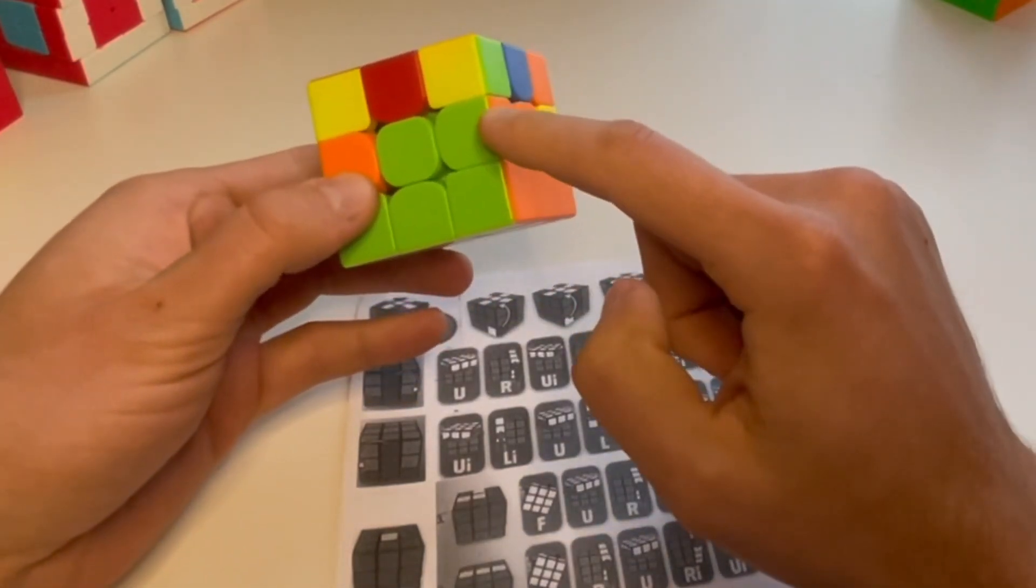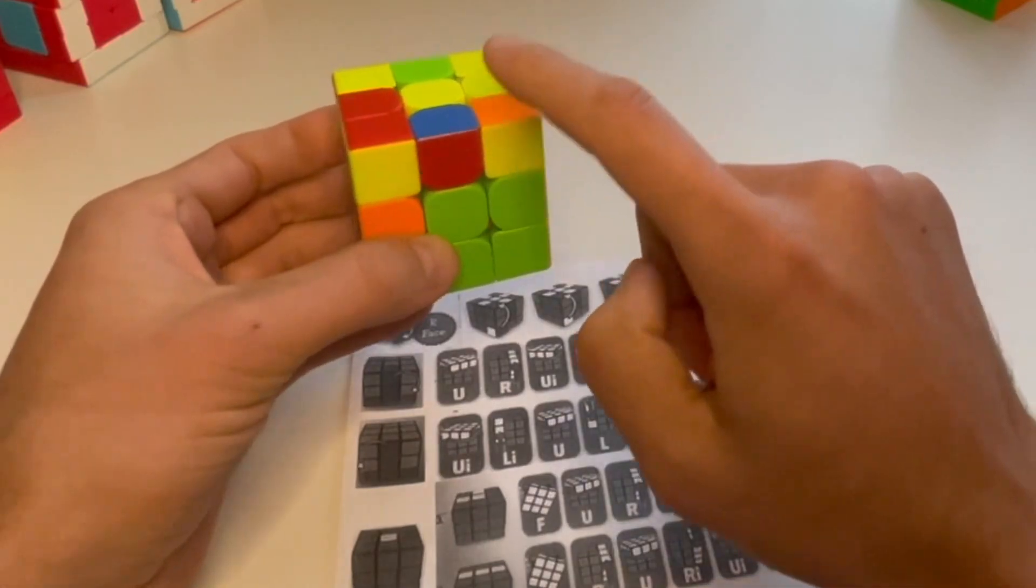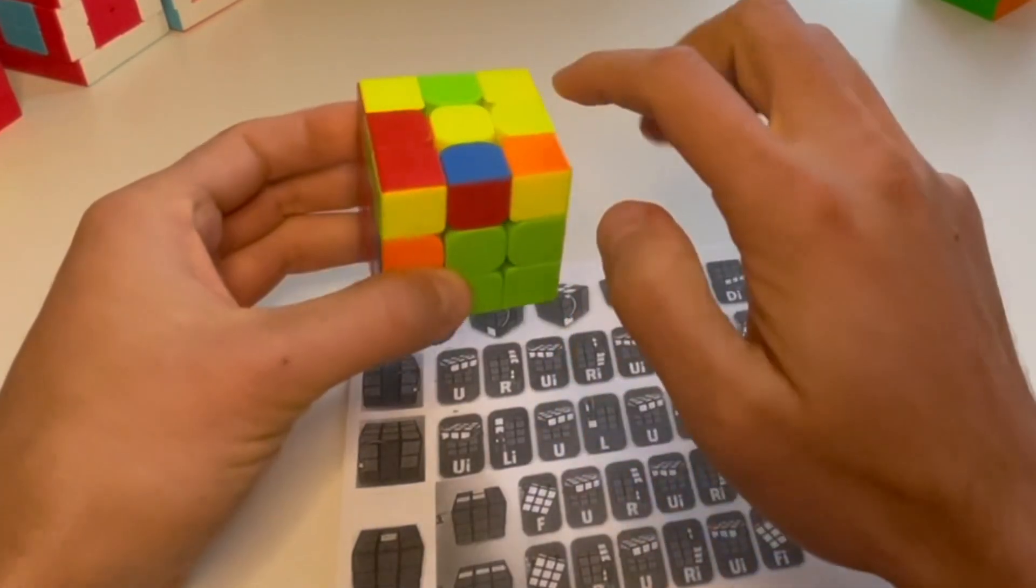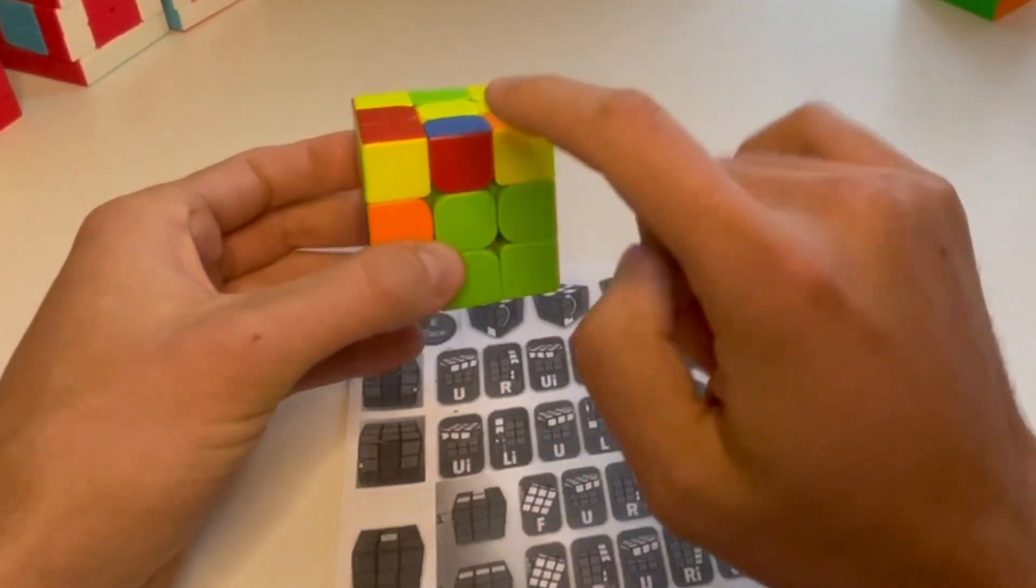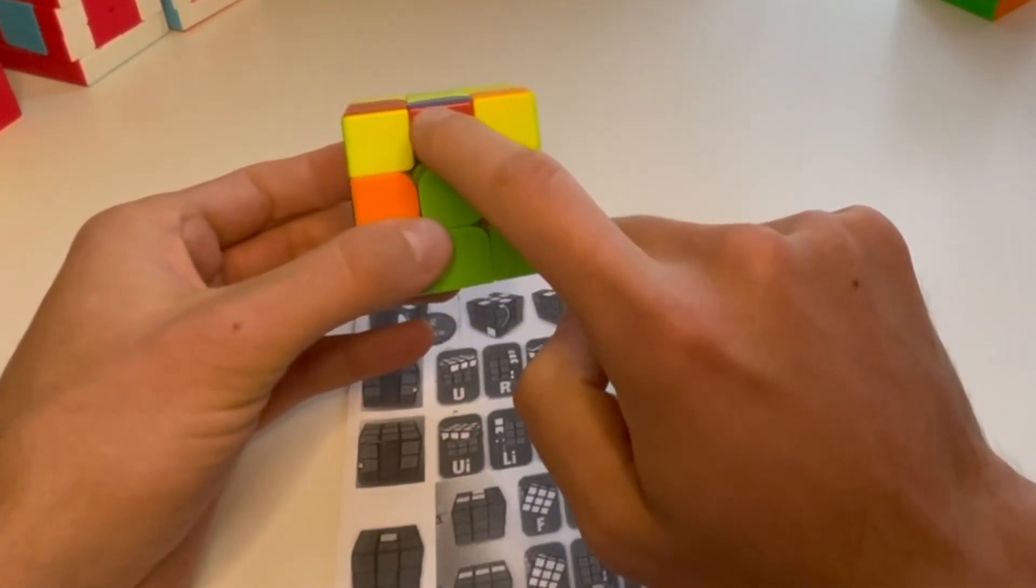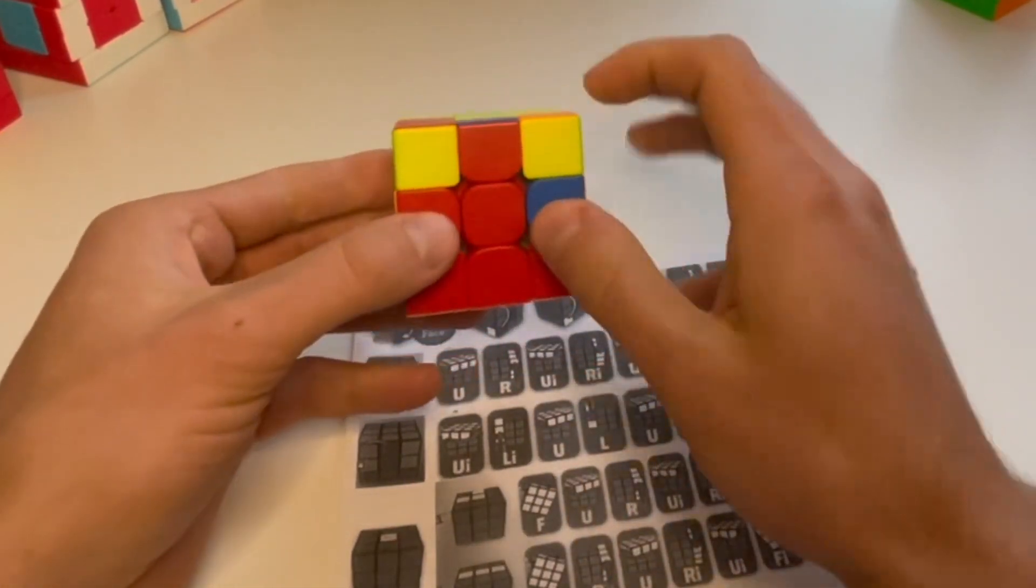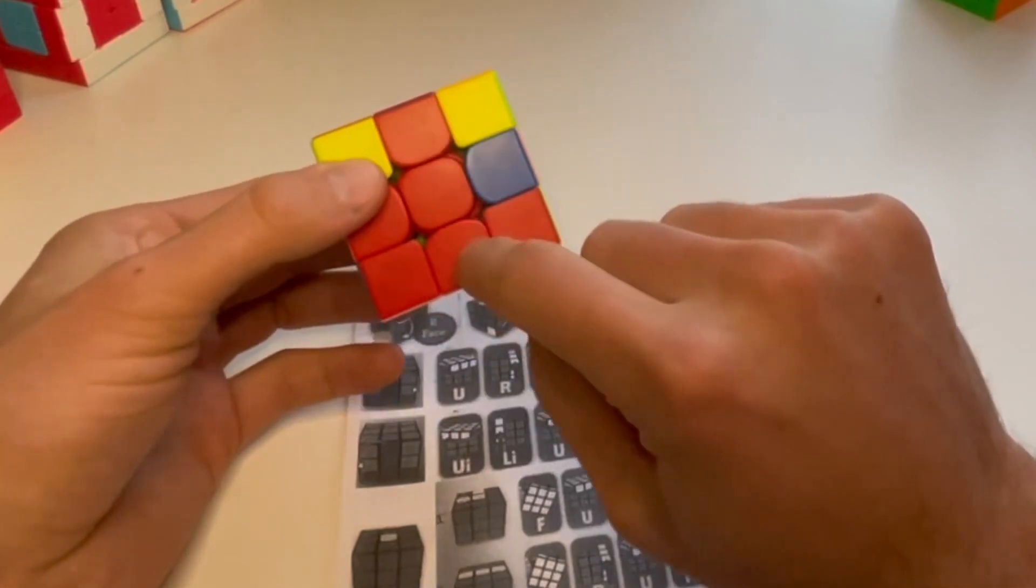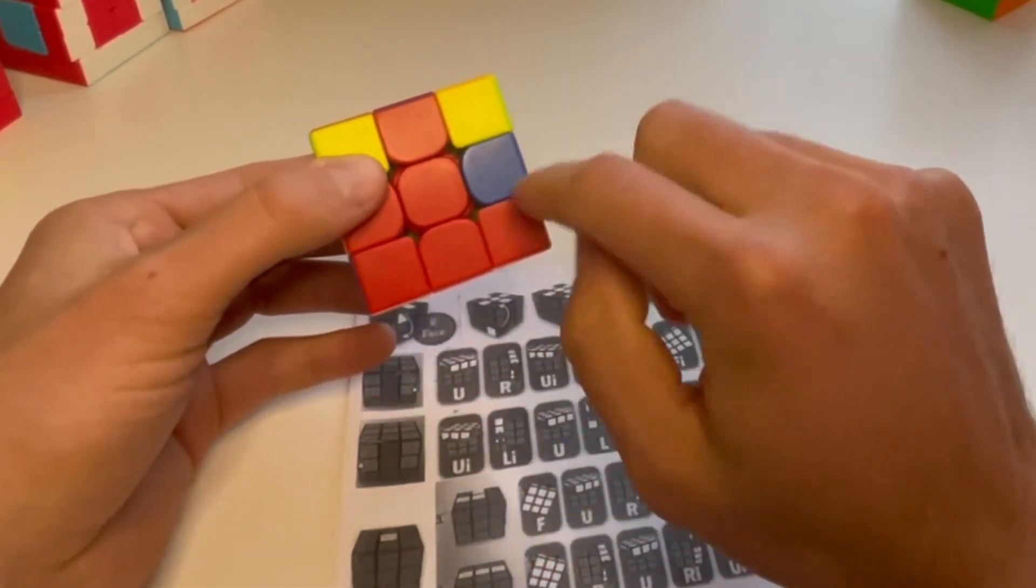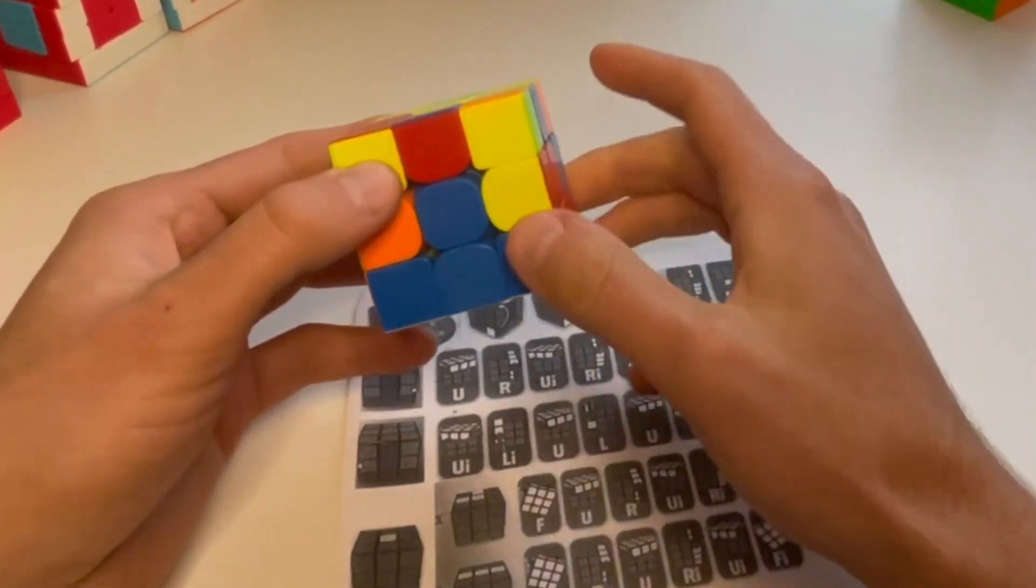We now want to find our next edge piece that is going to go on our second layer. I'm seeing, I know everything that's yellow belongs up here. This one has no yellow on it. This is one of the ones I want. Red is facing the side, so I want to match it up to this. So I now have my upside down T shape.